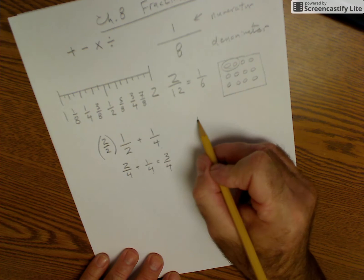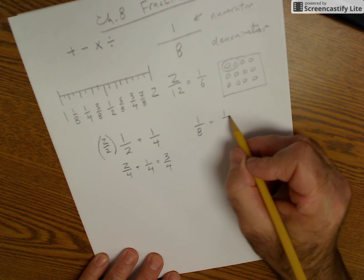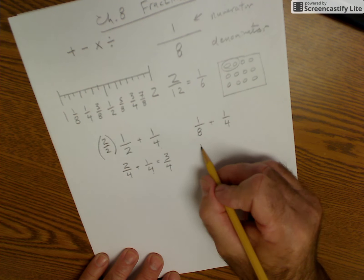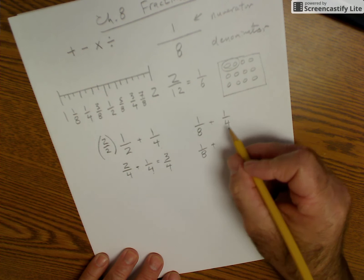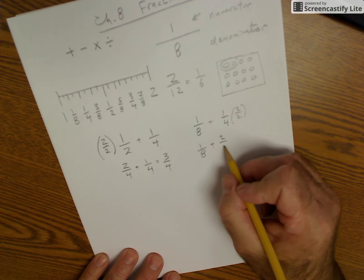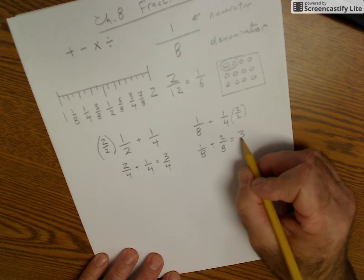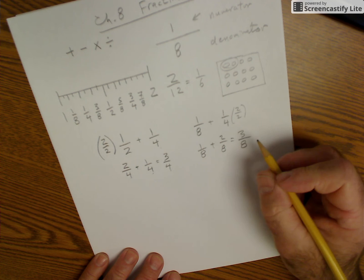So if I have 1/8 plus 1/4, common denominator is 8. I have 1/8 plus 2/8 to give me 3/8.